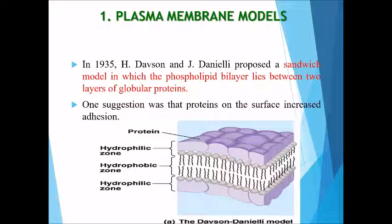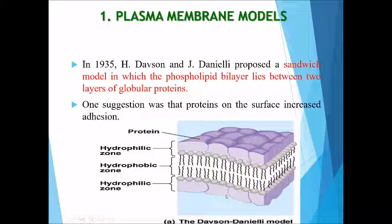The first model of the plasma membrane was proposed by Davson and Danielli, which is the sandwich model, in which the phospholipid bilayer lies between two layers of globular proteins. One suggestion was that the proteins on the surface increase the stability of the membrane.